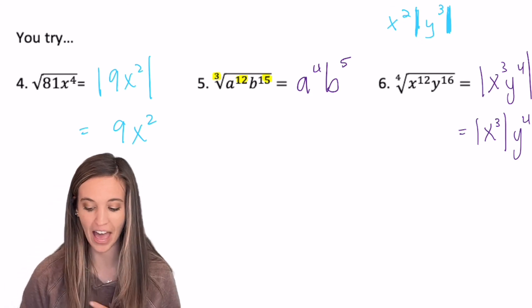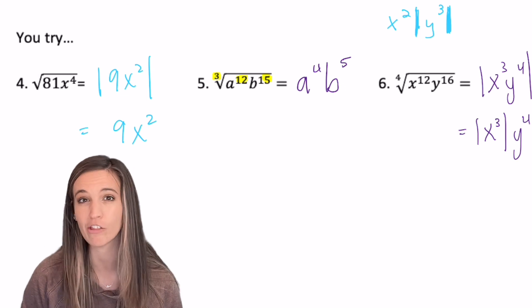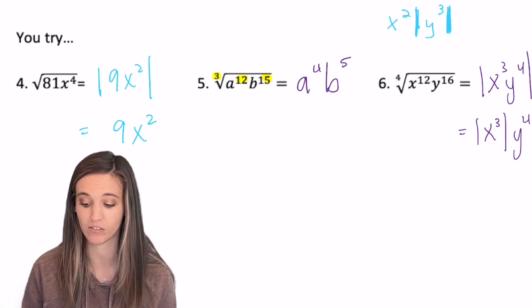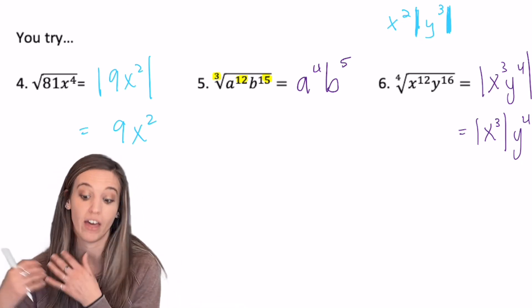This last one, I've got the absolute value of x cubed, y to the fourth. Now I didn't need both of those in the absolute value because y to the fourth is guaranteed to be positive. So I've just got the absolute value of x cubed and then my y to the fourth.